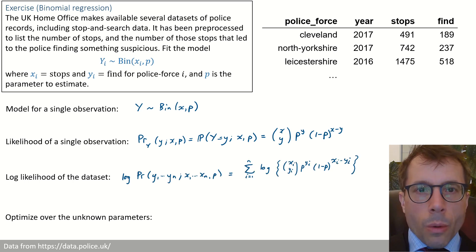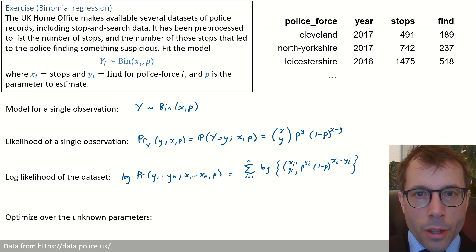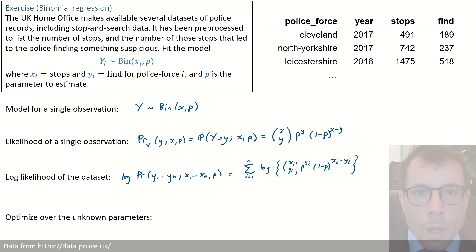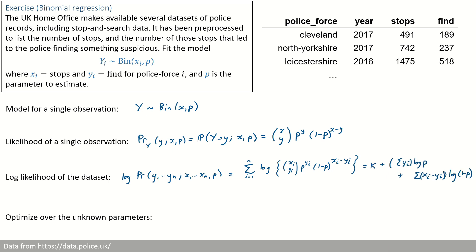Next, write out the log-likelihood of the entire data set. We assume the records are independent, so the log-likelihood of the data set is the sum of the log-likelihoods of each individual record. We want to maximize this function over p, so we gather all non-p terms into a constant — let's call it kappa — and do a little algebra to tidy things up. Last, we maximize with respect to p by setting the derivative d/dp equal to zero and solving. This is the answer we come up with.